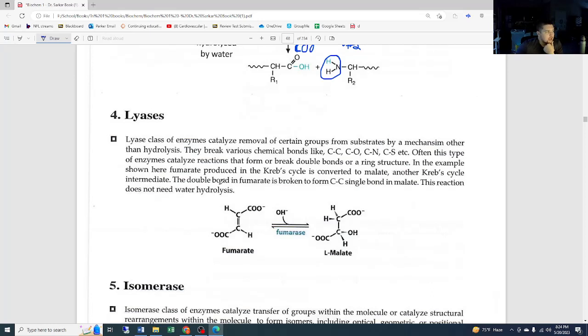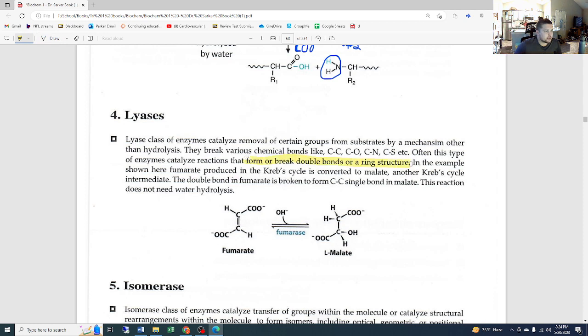Lyases. The lyase class of enzymes catalyze removal of certain groups from substrates by a mechanism other than hydrolysis. They break various chemical bonds like C-C, C-O, C-N, C-S. Often this type of enzyme catalyzes reactions that form or break double bonds or a ring structure—form or break double bonds or a ring structure. In the example shown here, fumarate produced in the Krebs cycle is converted to malate, another Krebs cycle intermediate. The double bond in fumarate is broken to form C-C single bonds in malate. This reaction does not—that's the key—does not need water hydrolysis.